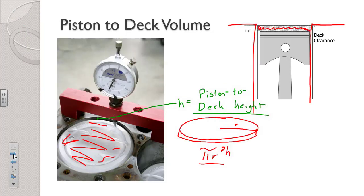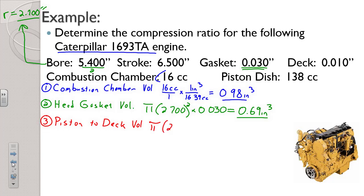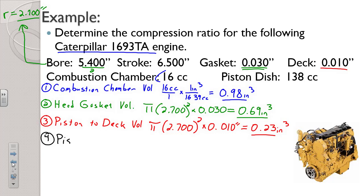Piston to deck volume — that space above the piston — is pi r squared times height, as we've seen. Our deck height is 0.010 inches. So pi times 2.7 squared times 0.010 is 0.23 cubic inches. Below that is our piston relief volume. Diesel engines typically have a larger piston relief: 138 cc's, which works out to be 8.42 cubic inches.